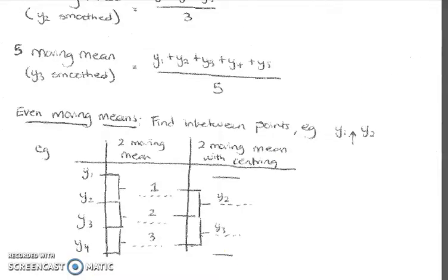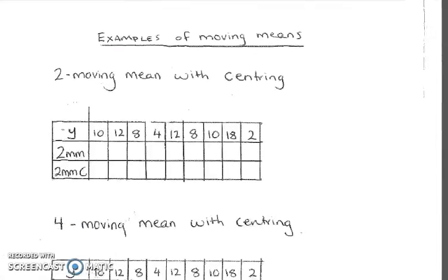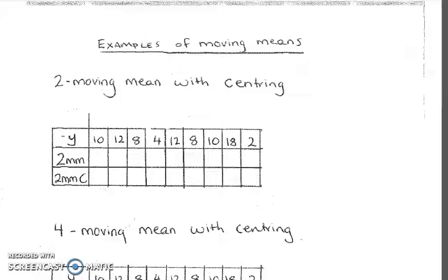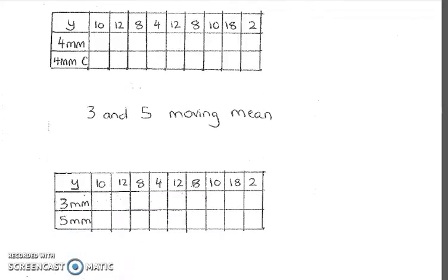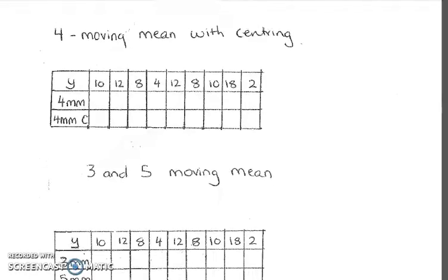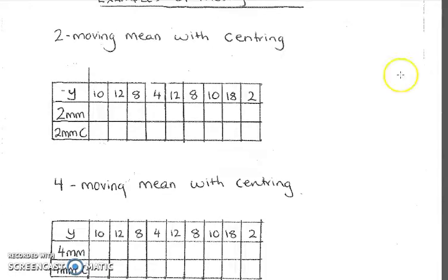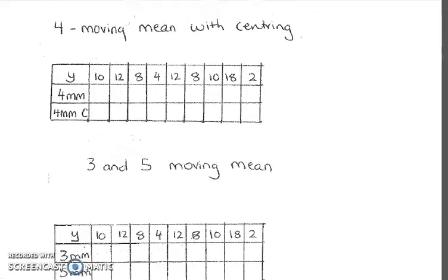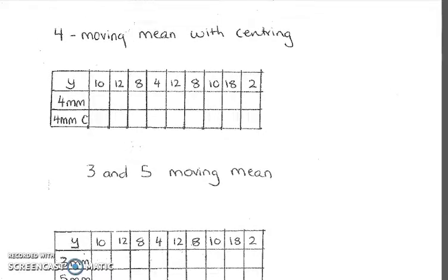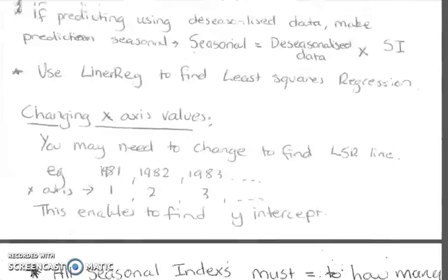When we were in class, at the end of our notes, I did go through some examples of two moving means, four moving means with centering, and three and five moving means. They only center when there's an even value of moving means. So two and four will be centered, three and five won't be. Have a look at these notes because you should have filled these in.